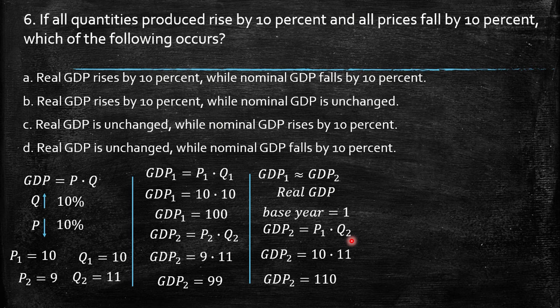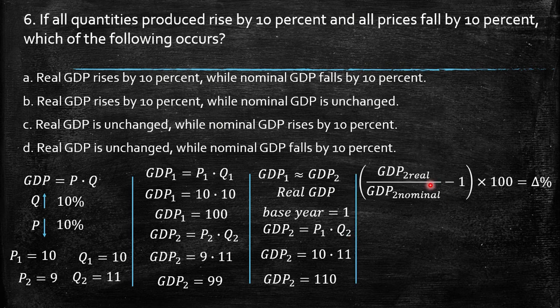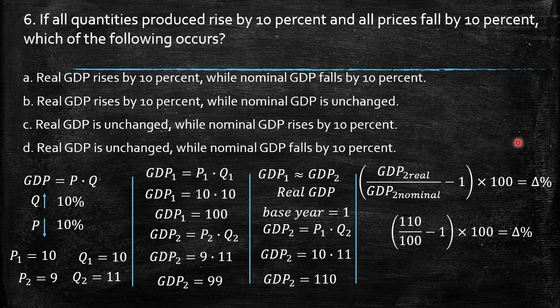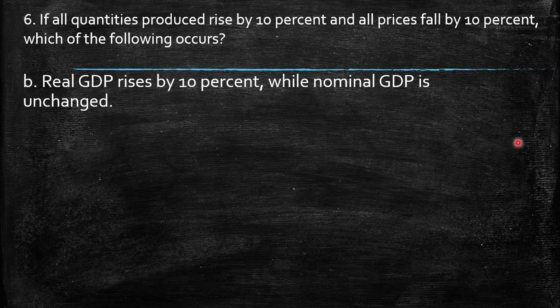In the base year, real GDP and nominal GDP are the same. The percentage change in real GDP is: (real GDP period 2 / real GDP period 1 minus 1) times 100, which is (110/100 minus 1) times 100 equals 10 percent. So real GDP rises by 10 percent while nominal GDP is unchanged.